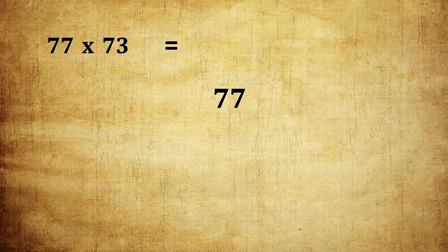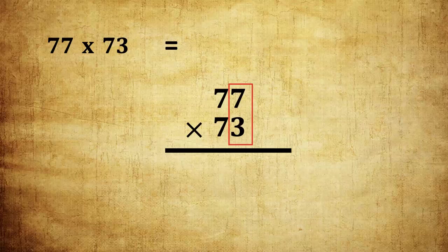Here 77 into 73. How to multiply easily? Both numbers' unit place digits are 7 and 3, and previous digits are same. In this case, when we add the unit place digits, we get 10.